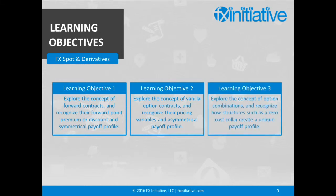The third learning objective is to explore the concept of option combinations and recognize how structures such as a zero-cost collar create a unique payoff profile. The concept of option combinations will be discussed, with a focus on a zero-cost collar, which is also known as a range forward or risk reversal.